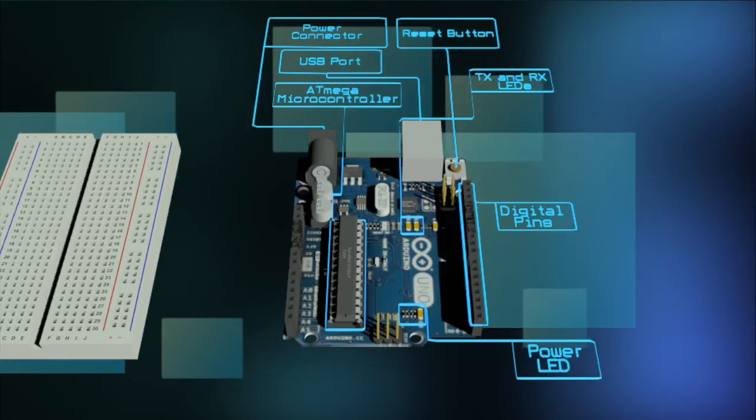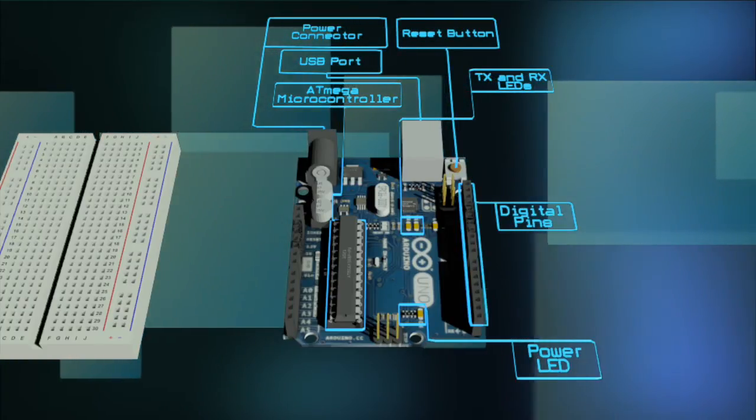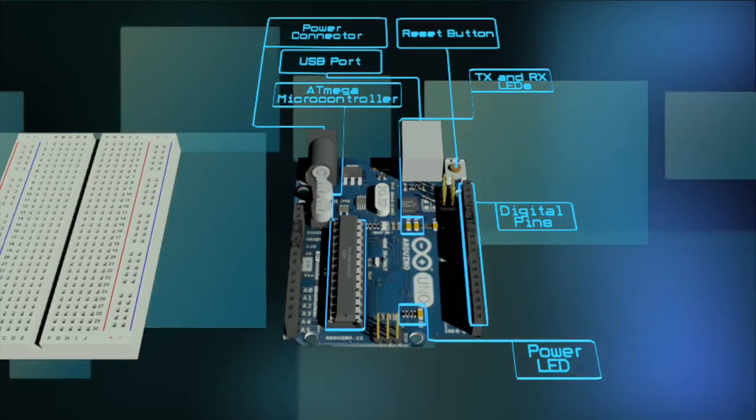On the side you see digital pins, and you use these pins with digital read, digital write, and analog write. Analog write only works with pins with the PWM symbol.